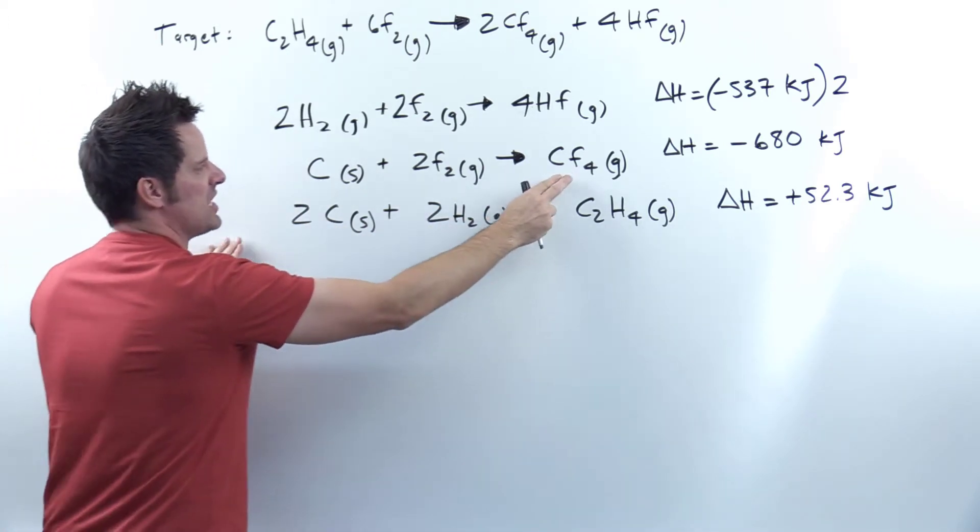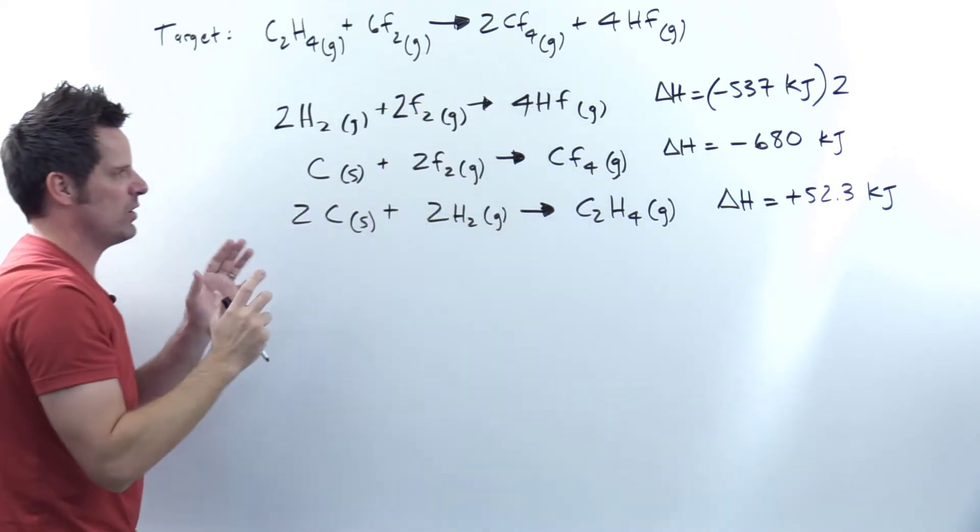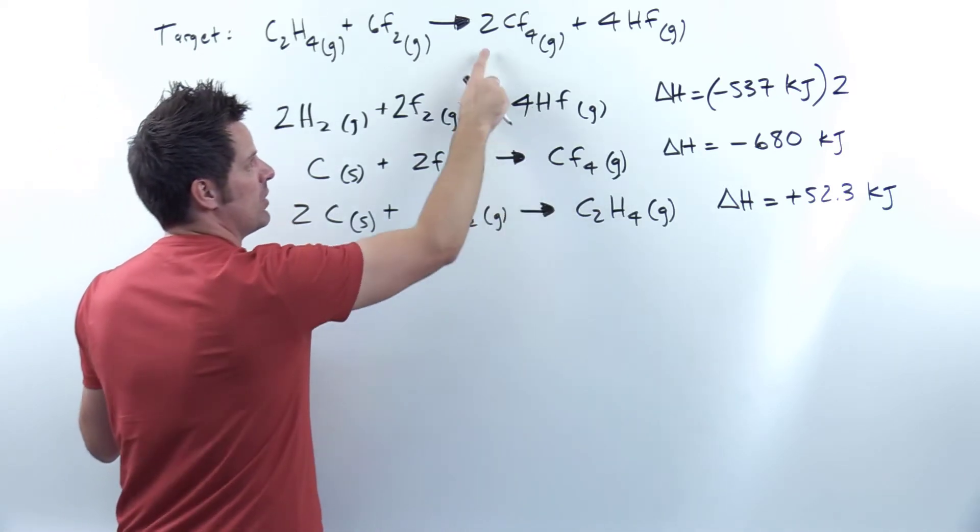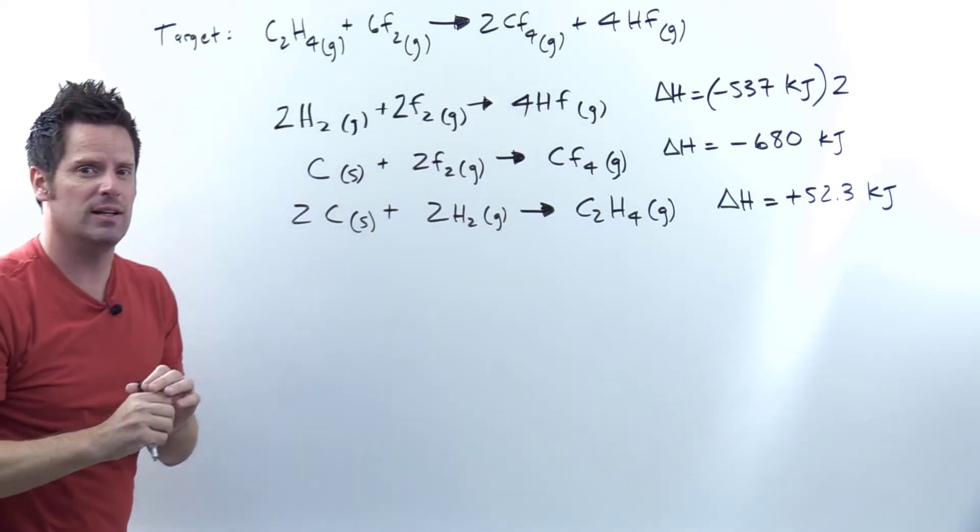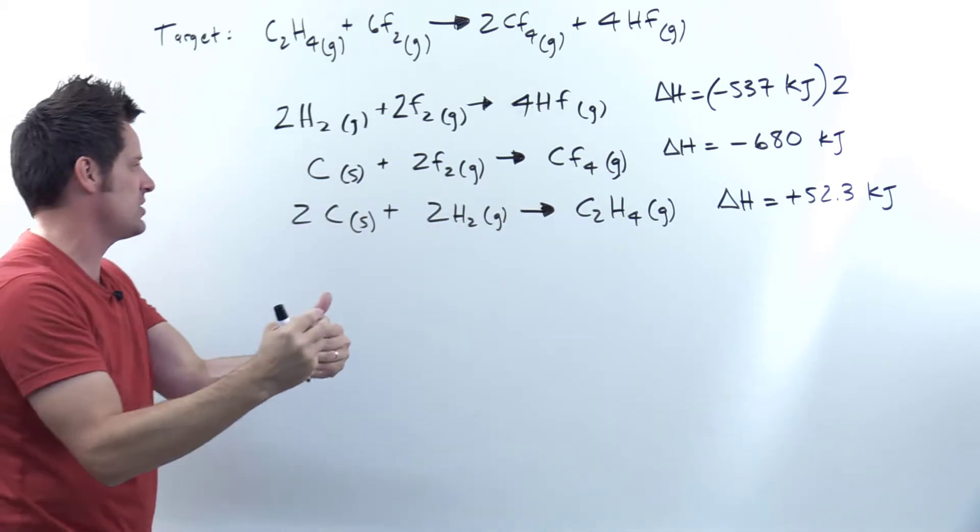CF4 is also on the right side of the yield arrow. Now conveniently, this one is on the right side of the yield arrow as well, but the CF4 here, there's only one in front of it, and there are two CF4s in the target. So I'm going to have to do the same strategy. I'm going to have to multiply every single term by two in order to get closer to that target.